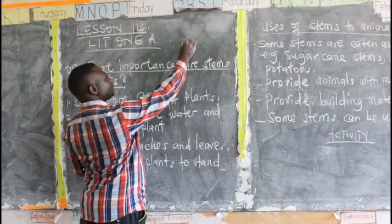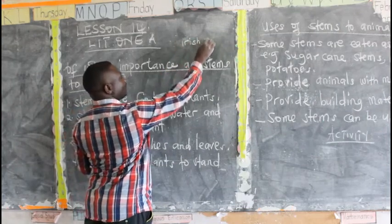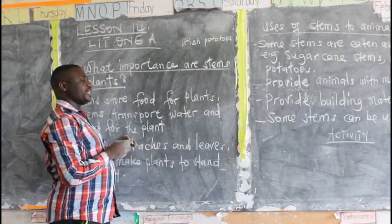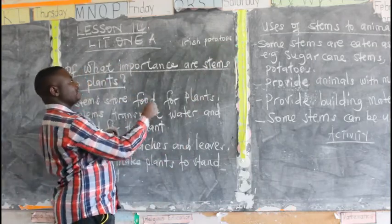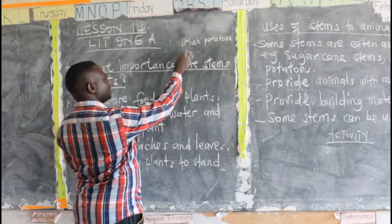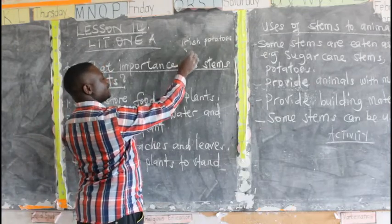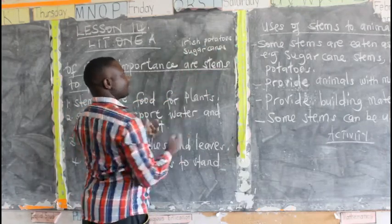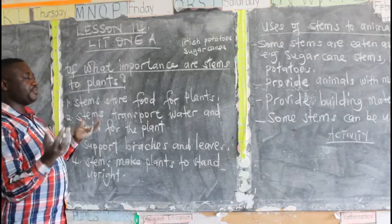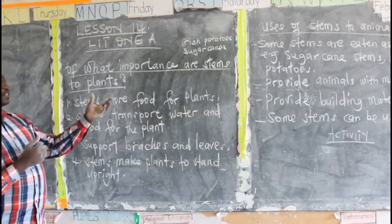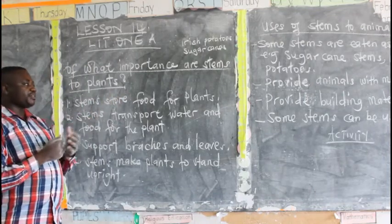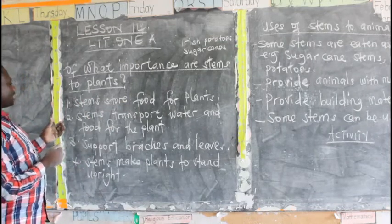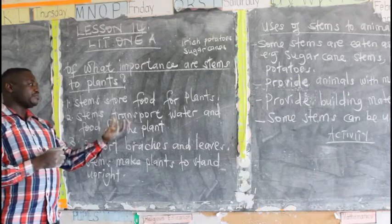We have Irish potatoes — they store food for the plant. We also have sugarcane; the stems of the sugarcane store food for the plant. So these are some examples of stems that store food for the plant. Moving on, stems also transport water and food for the plant.